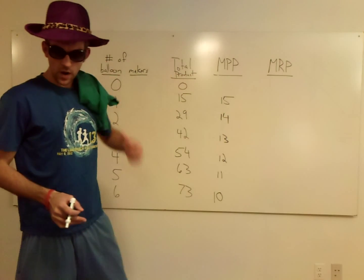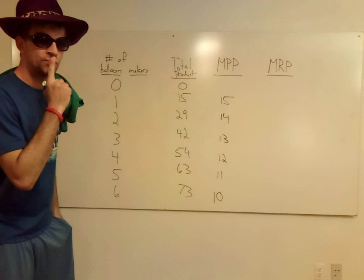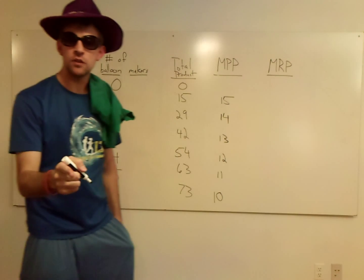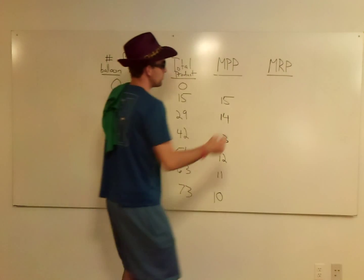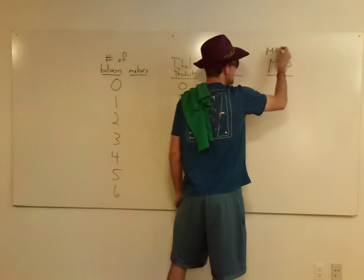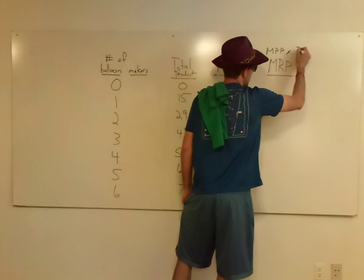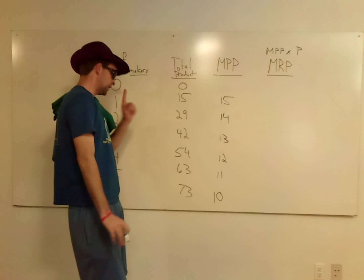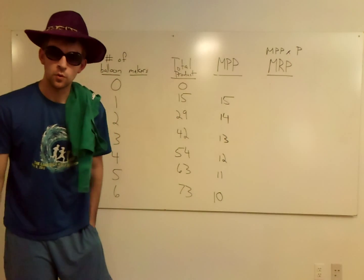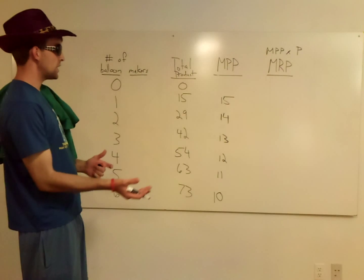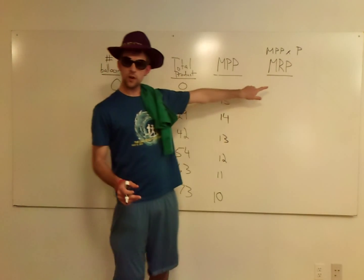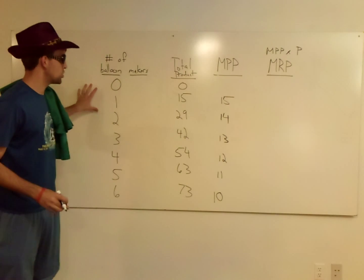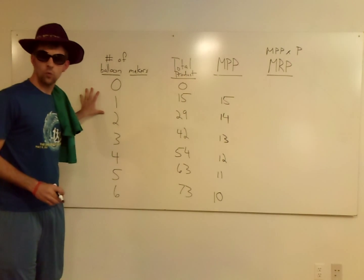Now, what did you get for your marginal revenue products? Hopefully, you got what I got. Because you can't do this yet. The way you get the marginal revenue product is you've got to take the marginal physical product and you've got to multiply it by the price of your product. And I didn't tell you how much the balloons are worth. So you can't figure this out.